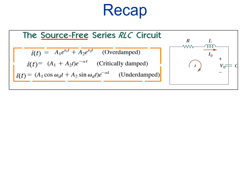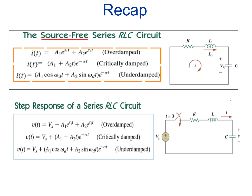Now let's recall that in case of a source-free series RLC circuit, where there was no source, we had three equations for the three cases: over damped, critically damped, and under damped. Now in case of a forced response or step response, there is a voltage source, so this voltage source will come into play. The equation becomes a voltage equation instead of a current equation, with the addition of the voltage source Vs; the other terms remain the same.